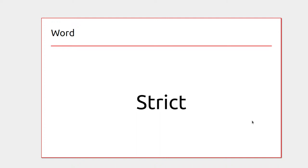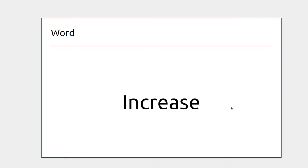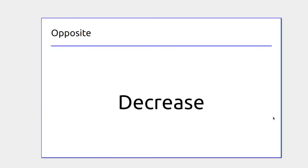A factory might be looking to increase production and put more out, but the opposite would be decreased production if things started getting very slow.